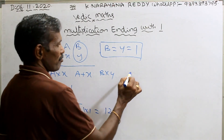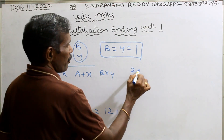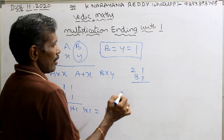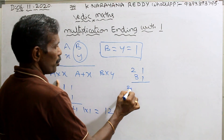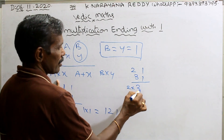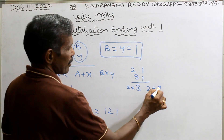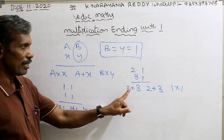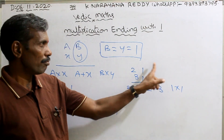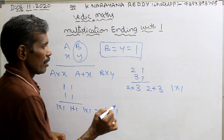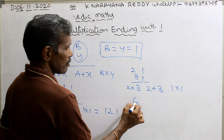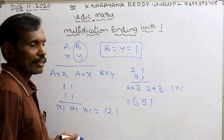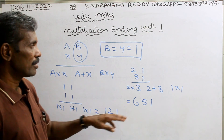Another number: 21 into 31. First multiplication 2 into 3, next addition 2 plus 3, next 1 into 1. That is: multiplication, addition, multiplication. Result: 6, 5, 1 — answer is 651.